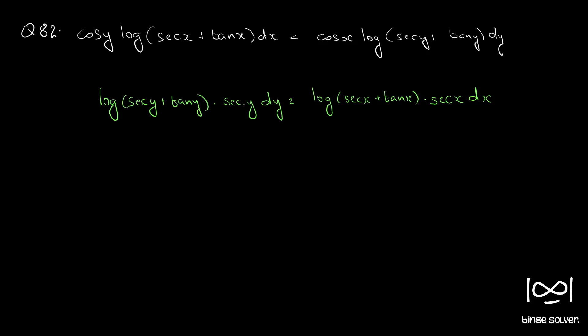So all the y terms are on one side and x terms on the other, so we can apply the method of separation of variables. But if we directly try to integrate both sides, the integration will get complicated as we have a log term and a sec y plus tan y inside, and we have a product of two functions — we'd have to use integration by parts.